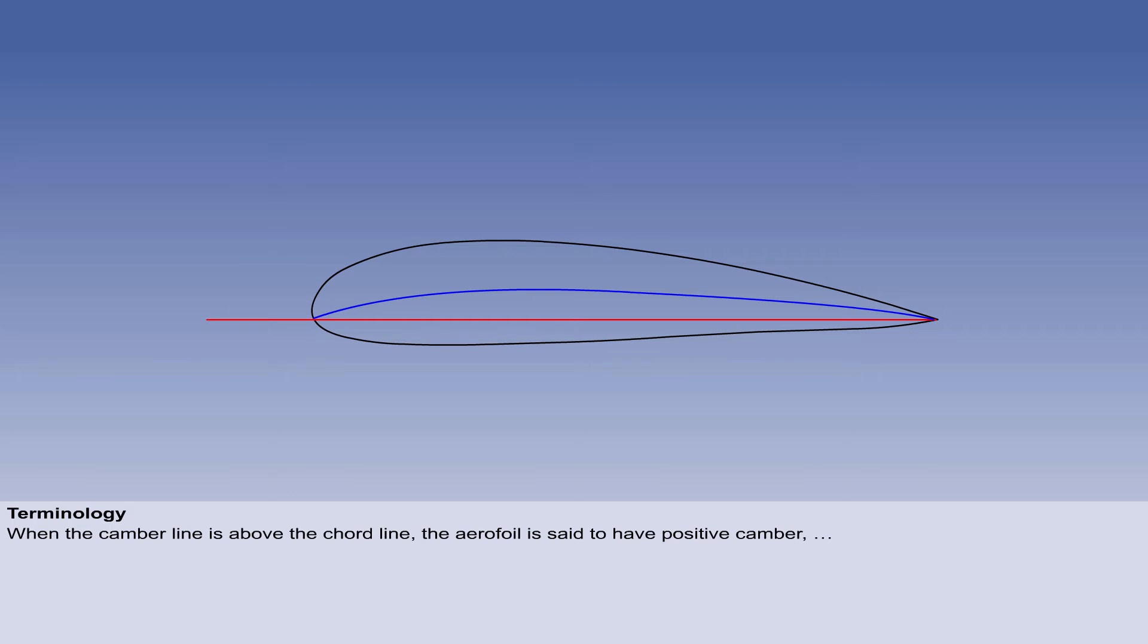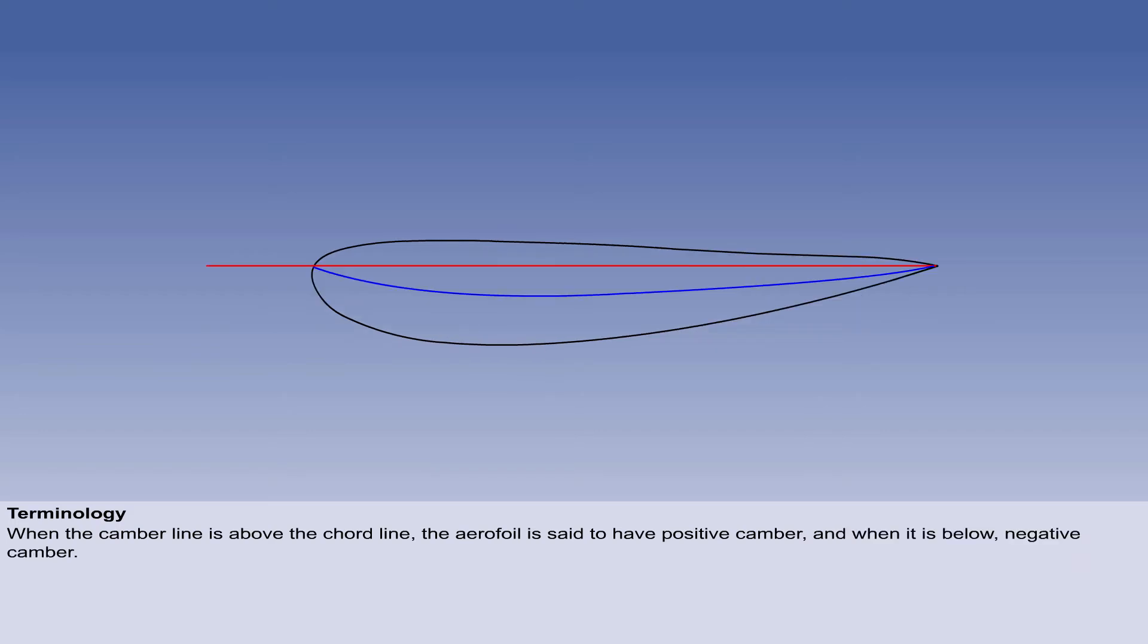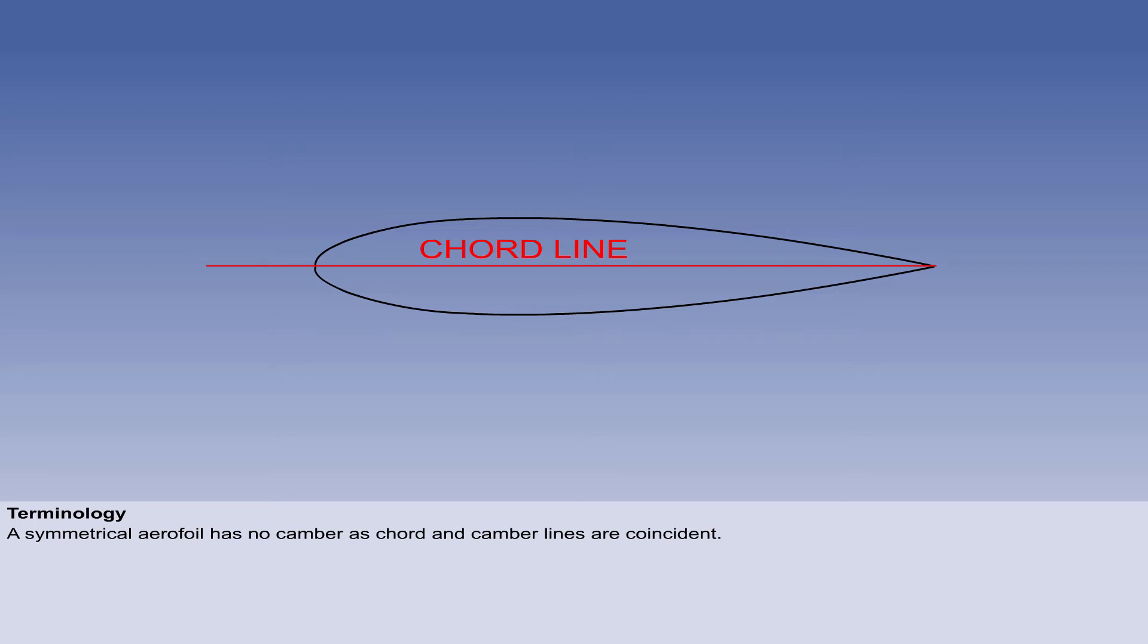When the camber line is above the cord line, the aerofoil is said to have positive camber, and when it is below, negative camber. A symmetrical aerofoil has no camber, as cord and camber lines are coincident.